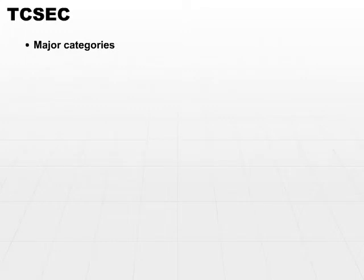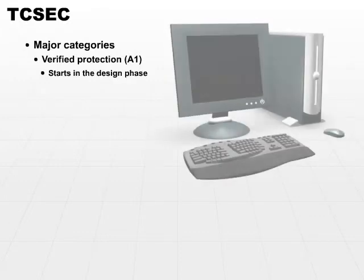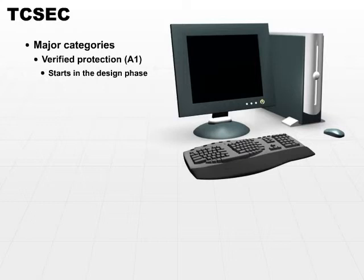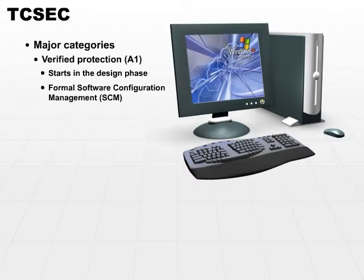Last but not least is the single category A1 for verified protection. Verified protection starts in the design phase, and from the very beginning of the design phase, all components — software, hardware, and operating system components — of an A1 system implement formal software configuration management.